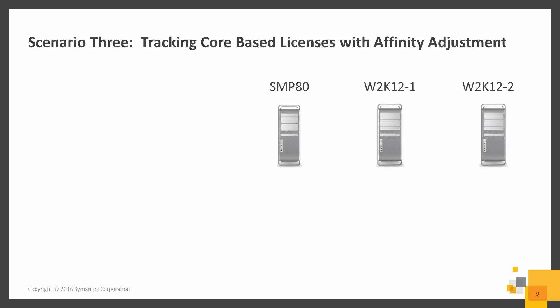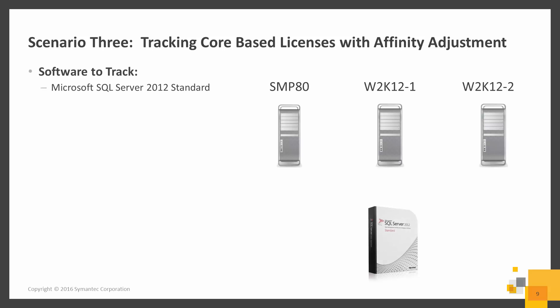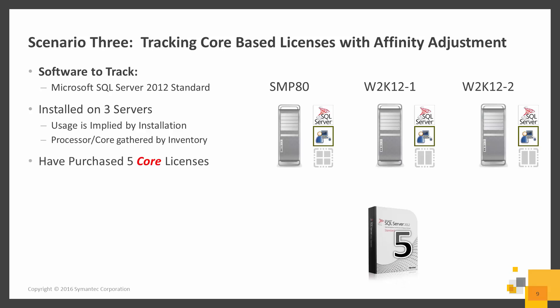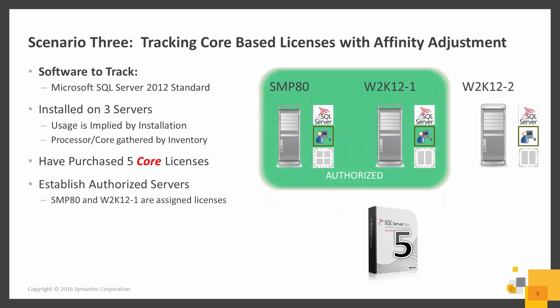In this scenario, we would like to track core-based licenses with Affinity Adjustment. We will be tracking Microsoft SQL Server 2012 Standard, and we've noted that it's been installed on three servers. Usage is implied by the installation of the software, and the processor and core inventory has been gathered. We have purchased five core licenses and established which servers would be authorized — in this case SMP80 and W2K12-1 were assigned core licenses. We also have information on the SQL Server affinity, which can be entered through manual entry, a data connector, or custom inventory. In the end, we need to see the resultant state.